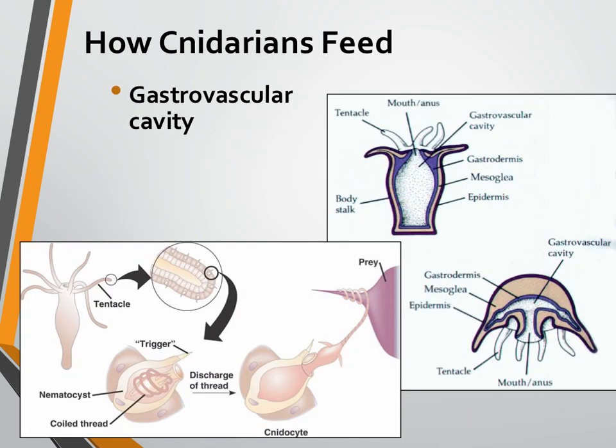Cnidarians have a gastrovascular cavity, and this cavity is going to be where food and waste go into and come out of. As you can see in this picture, this whole cavity is where their food is going to go into. They're going to digest it, and then that opening — they only have one opening, and that opening is both their mouth and their anus. So they take food into that opening, and then they expel waste out of that opening.